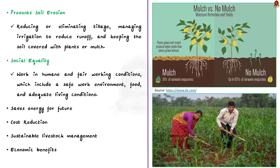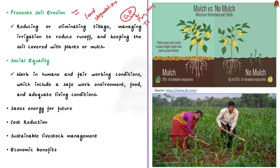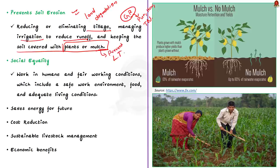Sustainable agriculture also prevents land degradation. Excessive application of chemical fertilizers and irrigation has affected soil quality — even in India, the Green Revolution provided adequate food but affected soil in places like Punjab, Haryana, and Tamil Nadu. Practices of sustainable farming such as reducing or eliminating tillage, managing irrigation to reduce runoff, and keeping soil covered with plants or mulch help ensure there is no soil erosion and prevent land degradation.